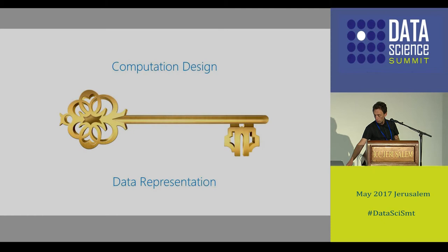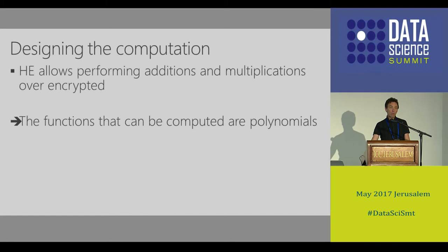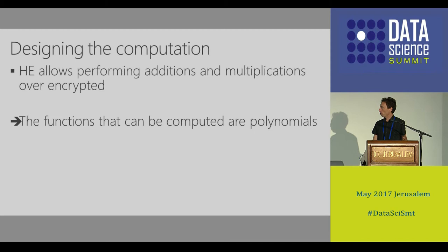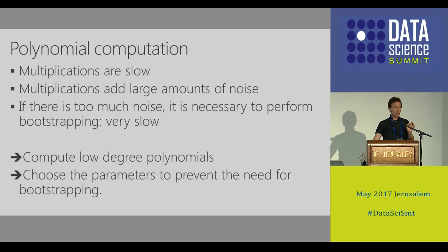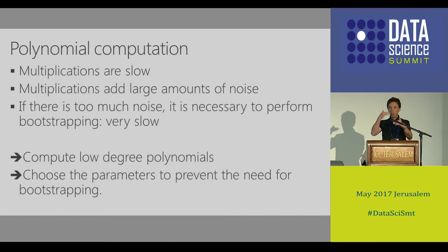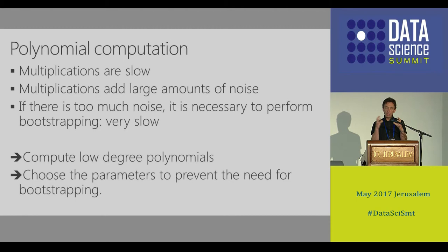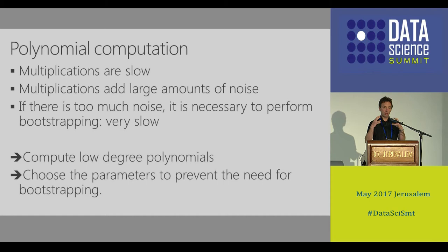Let's talk about the design of the computation. Homomorphic encryption allows you to do multiplications and additions, so the kinds of functions you can compute are polynomials. You want to think about whatever you're trying to apply as a polynomial. But multiplications are much slower than additions, and not only that - they add a lot of noise. If you apply multiplications on top of multiplications, at a certain point the noise will be too high and you won't be able to decrypt the data. So that leads you to thinking about computing only low-degree polynomials.